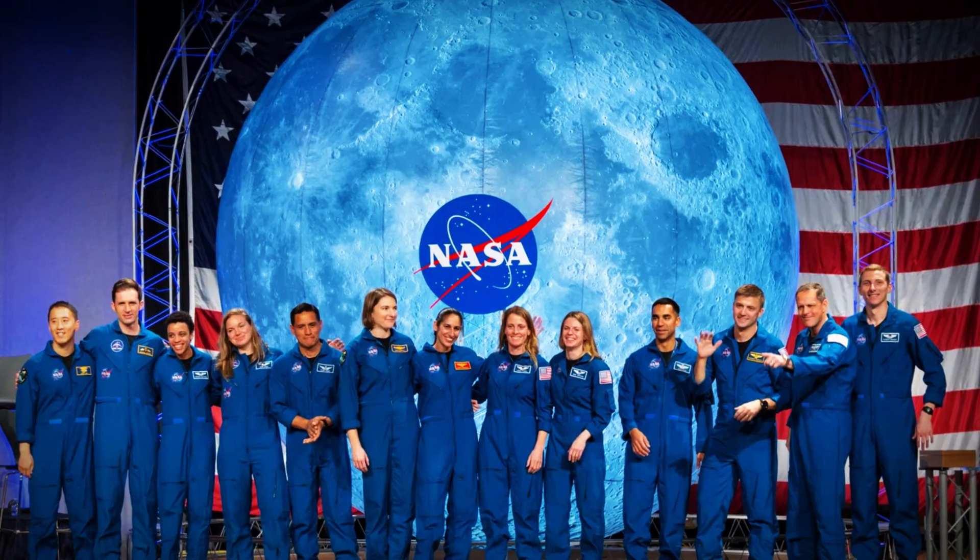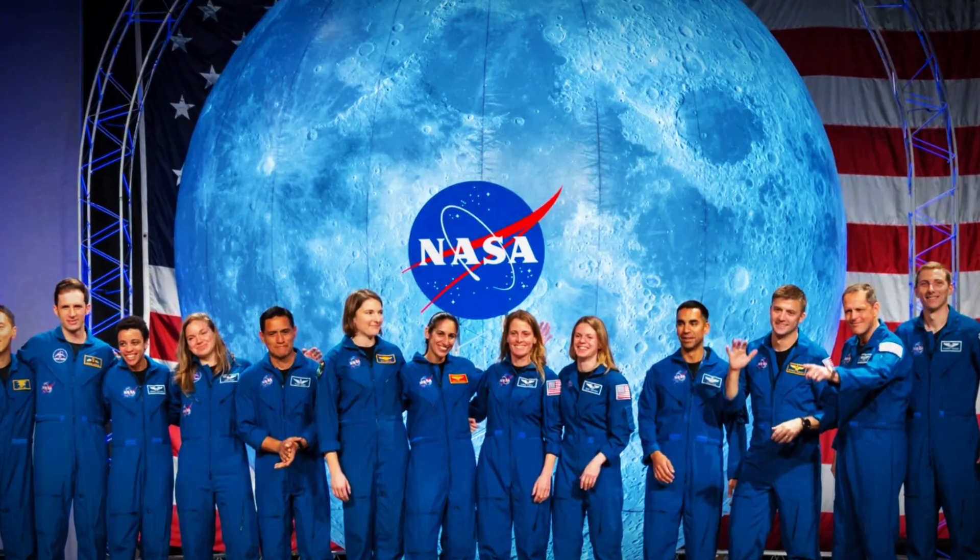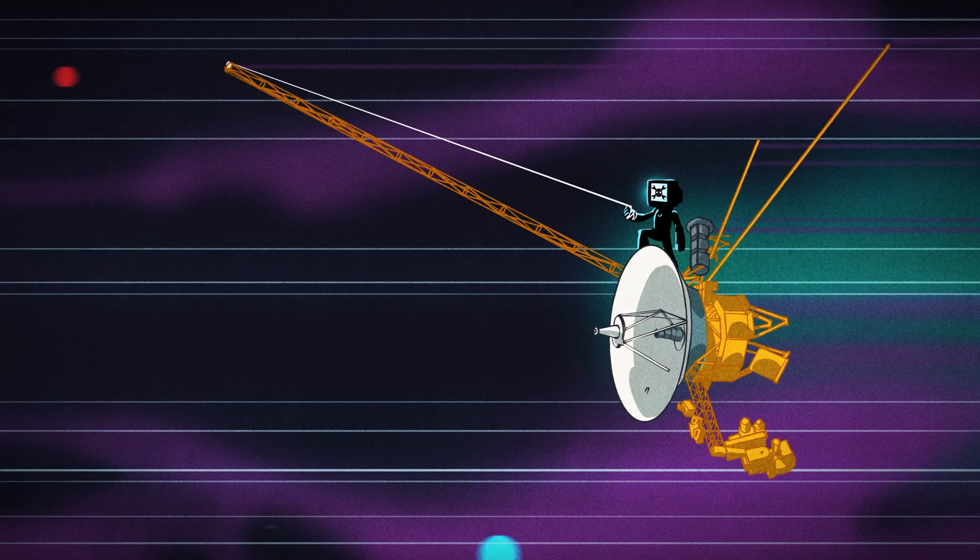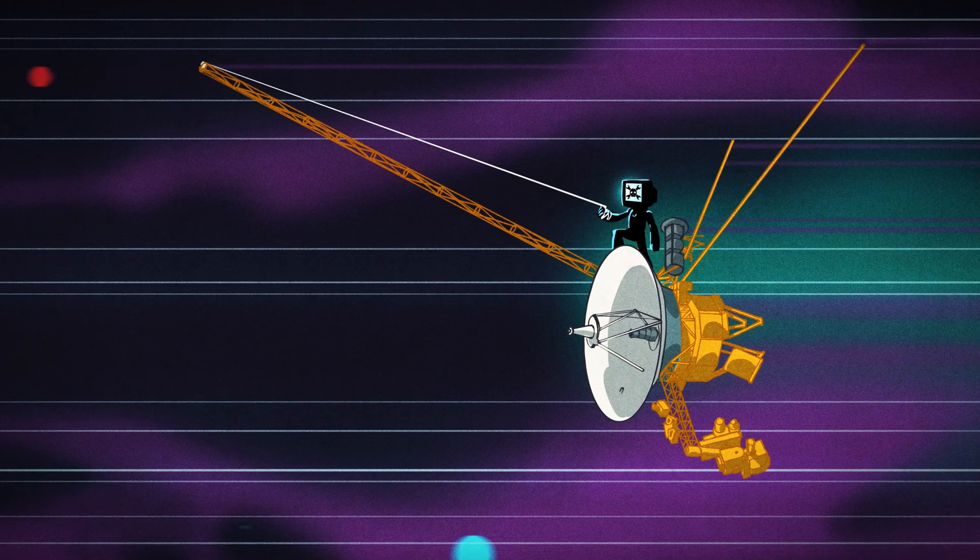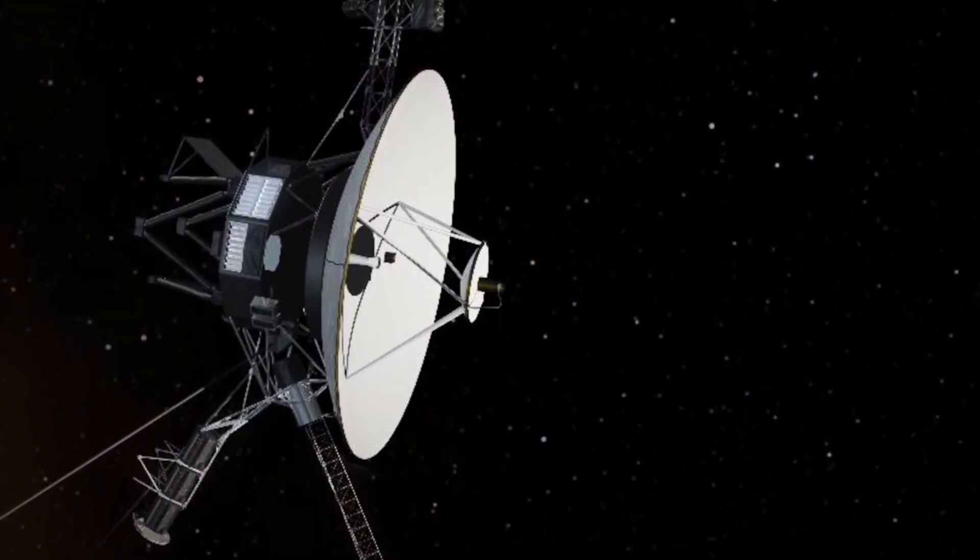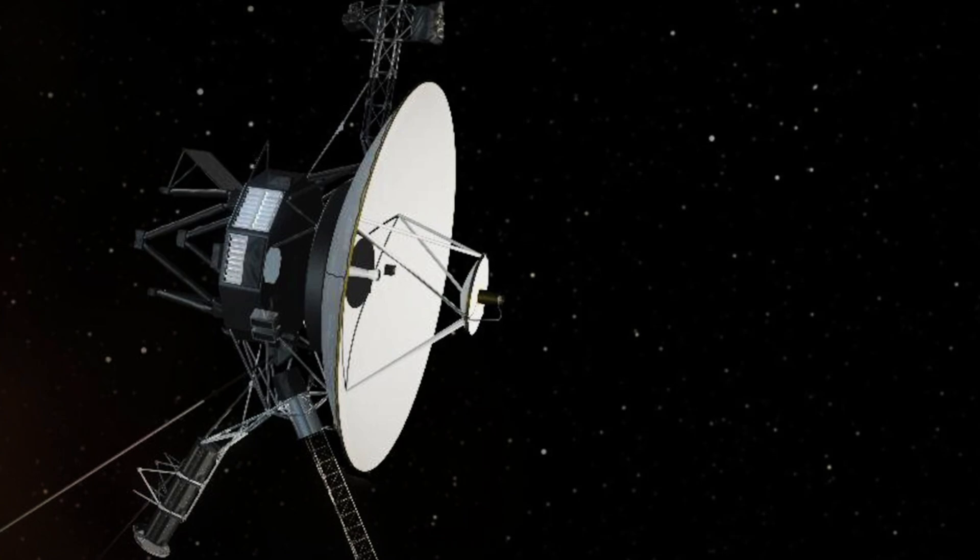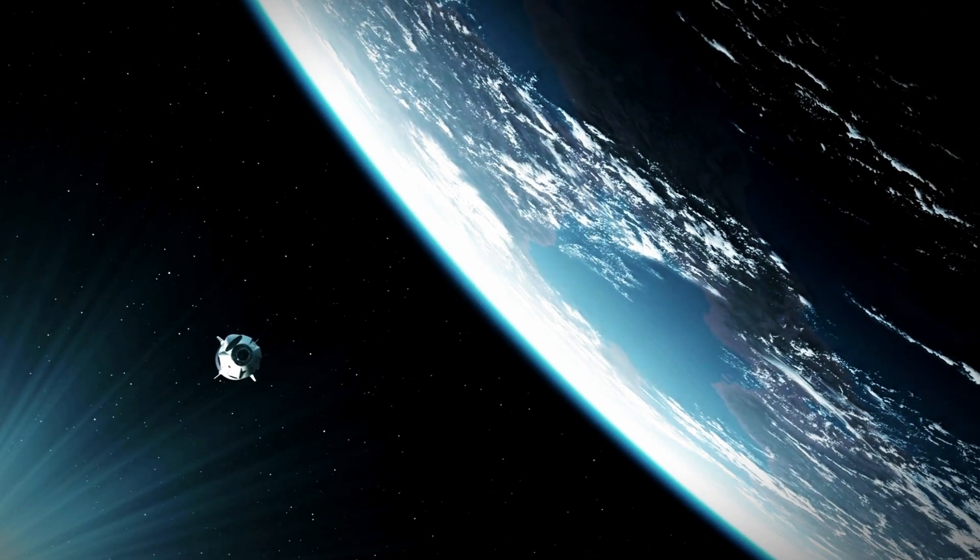NASA took this very seriously. They called an emergency meeting to figure out what had gone wrong. Nothing made sense. Why would the ACS start using a computer that had been shut down for over three years? And even stranger, the fail-safe system that was supposed to put Voyager into safe mode did not activate. It was like the spacecraft was ignoring its own rules.